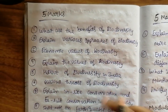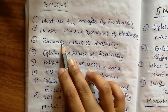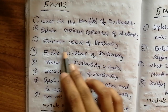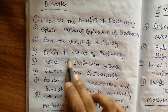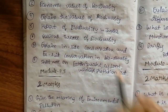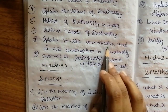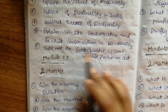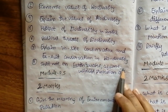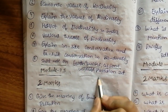Next, the 5-mark questions: what are the benefits of biodiversity, explain various approaches of biodiversity, economic values of biodiversity, explain the values of biodiversity, hotspots of biodiversity in India, various threats of biodiversity, explain in-situ conservation and ex-situ conservation of biodiversity, and write a short note on the Wildlife Protection Act.